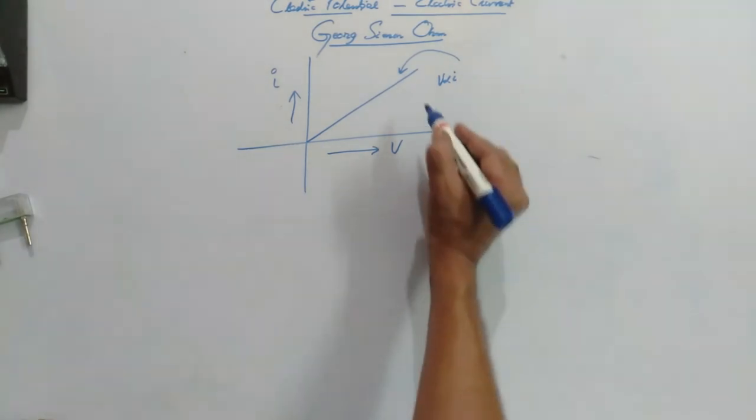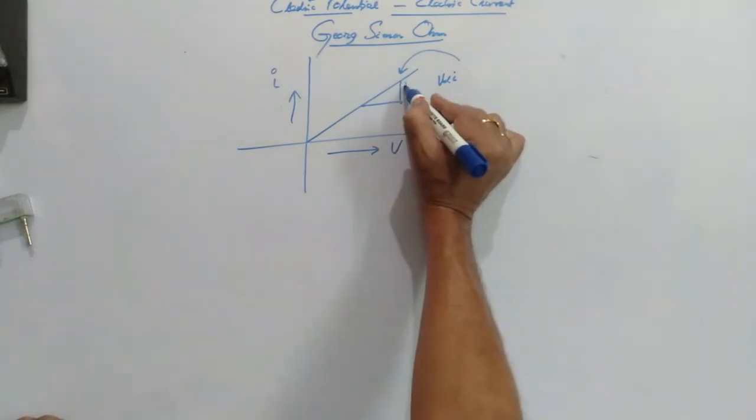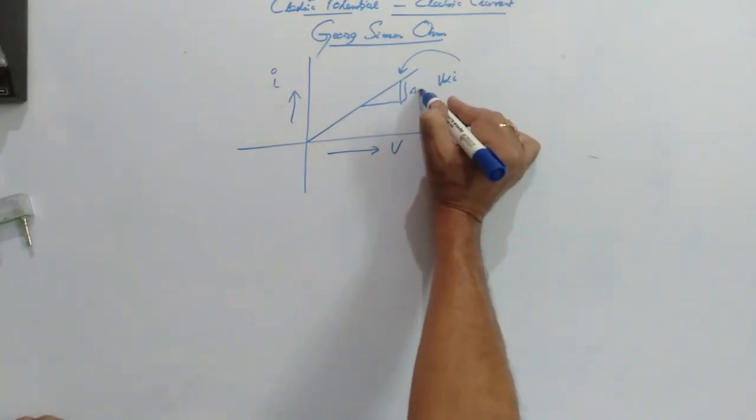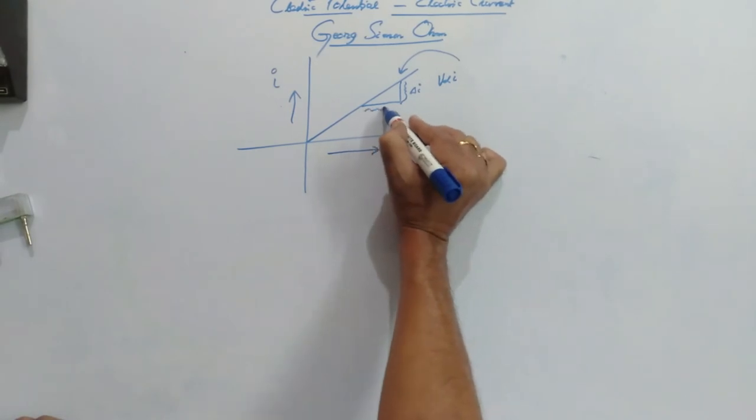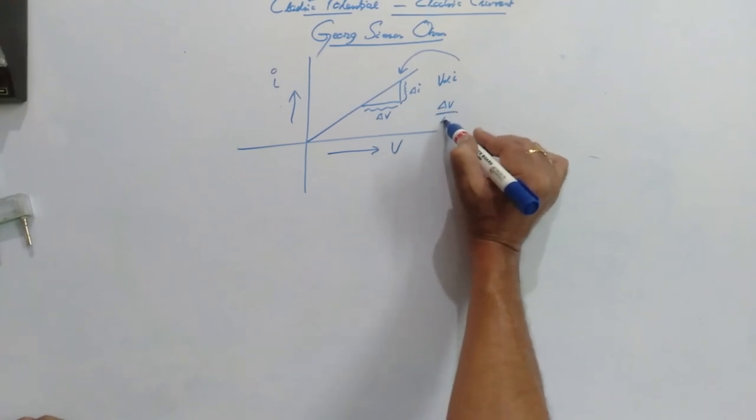And from this graph also, we can obtain the resistance anywhere. If you take, this is change in current and this is change in voltage. So change in voltage by change in current.